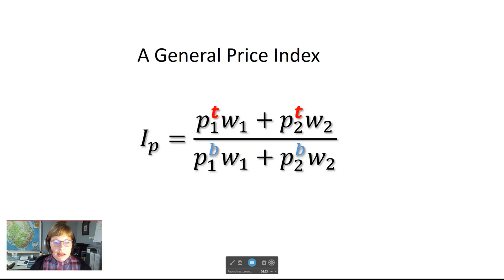Let's first look at a general price index. Different groups and organizations may develop a price index to compare prices over time using weights on different goods and services. We have the price in the current period, time t, weighted by a weight for the first price, weight w1, and for the second good, weight w2.